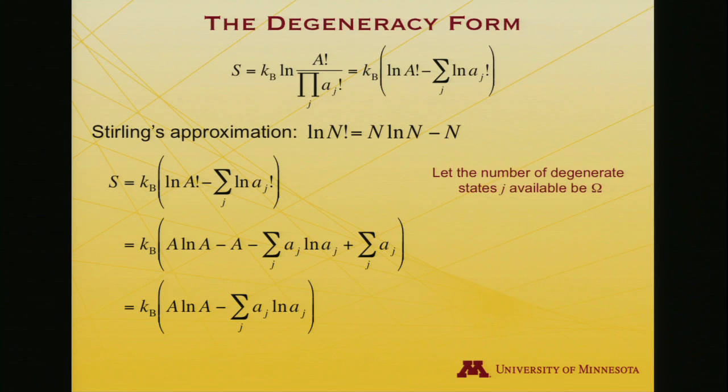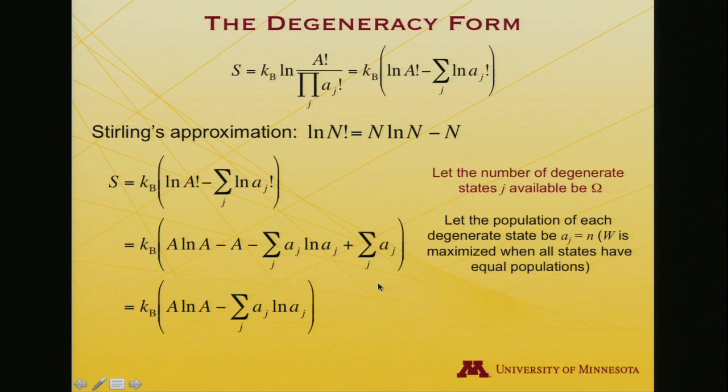So now, let's let the number of degenerate states, j, that are available to the system, be represented by capital omega. So that's what I'm summing over here, all the degenerate states. And the population of each degenerate state is going to be equal to some number n. And they're all going to be the same number, because remember, that's when W is maximized, when all the states have the same population.